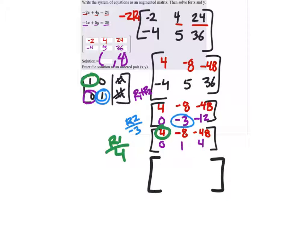So I got 4 divided by 4 is 1. Negative 8 divided by 4 is negative 2. And negative 48 divided by 4 is negative 12. And I still got that other column. 0, 1, and 4.